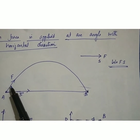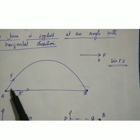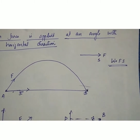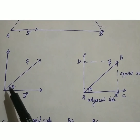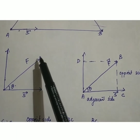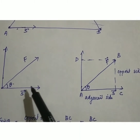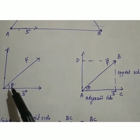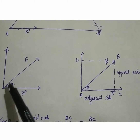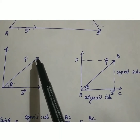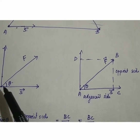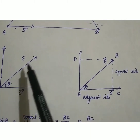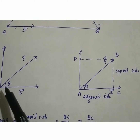Here we can see the force and displacement make an angle. The force is in this direction, at an angle, and displacement is in the horizontal direction. This force and displacement make an angle theta. So the force is acting in this direction, and the whole force is not acting or being used for the displacement in the horizontal direction. This force is actually divided into two components.